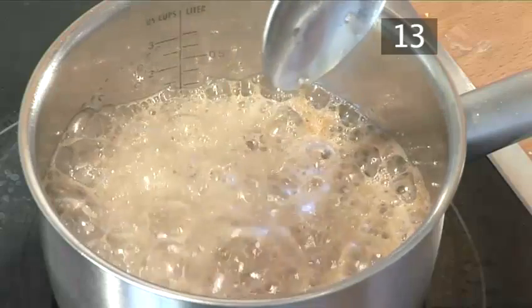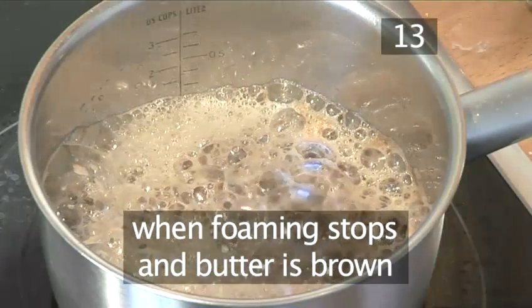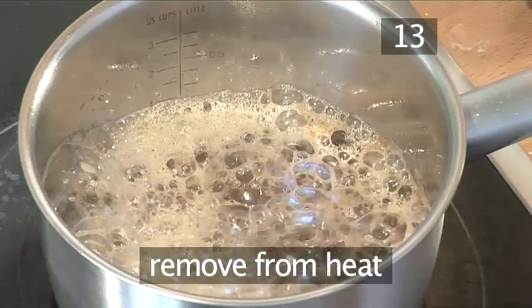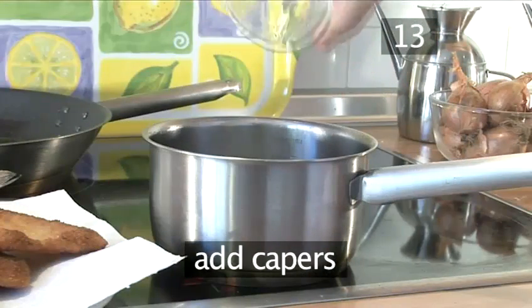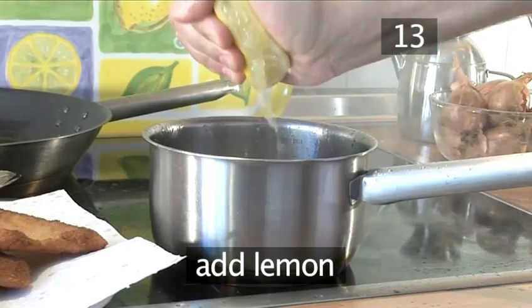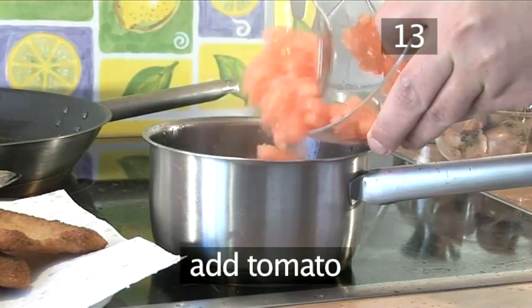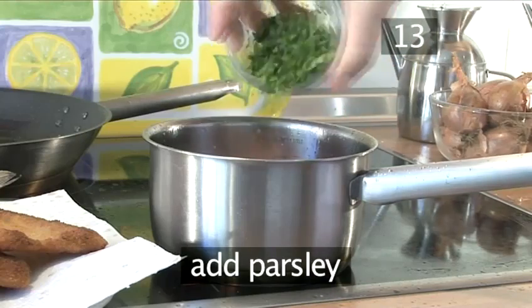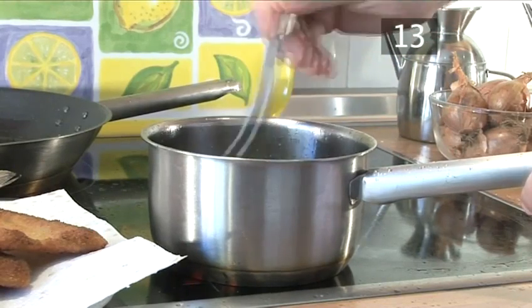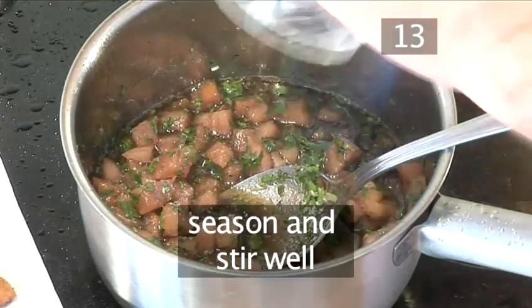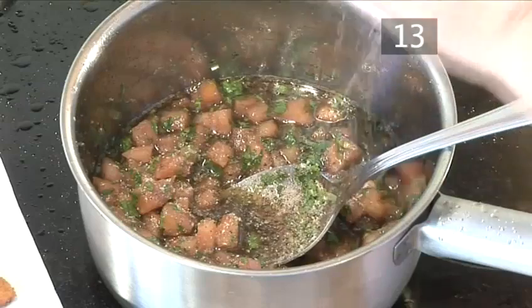When the foaming of the butter subsides and it turns brown, take the pan off the heat. Here we add the other ingredients: the capers, the lemon juice, the cubed tomatoes, and of course the parsley. Season the sauce with salt and pepper and stir well. It is now ready to serve.